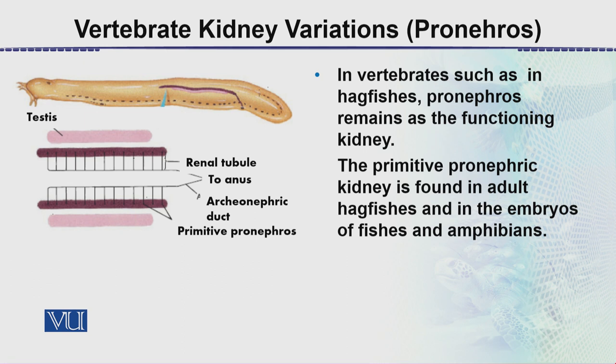Looking at this diagram, we can see a hagfish, and within its body there are kidneys. These are referred to as the renal tubules, found on both sides.